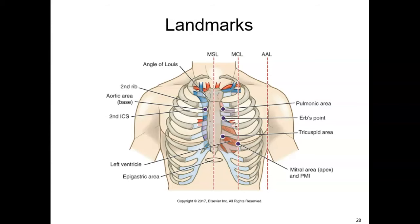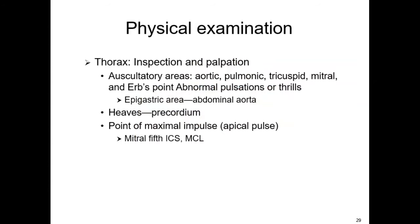Anytime the PMI is outside of where we expect it to be, it could indicate an enlarged heart. Under the thorax, do your inspection and palpation — remember 'All People Enjoy Time Magazine.' Listen for any abnormal thrills or bruits. The abdominal aorta is in the epigastric area; we look for visible pulsations. In thin patients, a visible pulsation is common and rather normal since their aorta is closer to the skin surface, unless there are abnormal findings like bruit, pain, or hypotension.